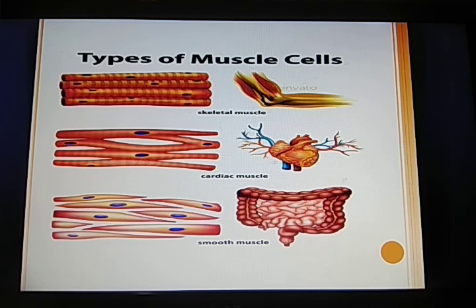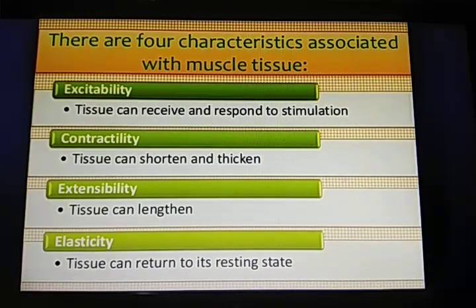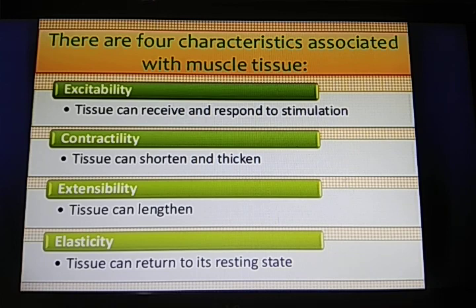Cardiac muscle is also involuntary and is a special type of muscle that carries the characters of both skeletal and smooth muscles. The basic characteristic features of muscular tissue: it can receive and respond to stimulation — that is excitability. It is contractile — it can thicken, expand, and contract. It has extensibility — the tissue can lengthen. And it is elastic in nature — it can return back to its resting state.